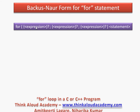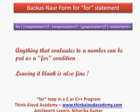Looking at the Backus-Naur form for the for statement, it says: for, open bracket, an expression which is not really necessary, followed by a semicolon, another optional expression followed by a semicolon, a third optional expression, then closing bracket, and the for loop statement. This means anything that evaluates to a number can be put as a for condition in any of the three positions, and you can leave any or all of them blank — that is also valid.